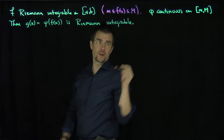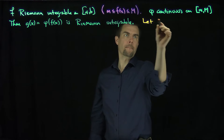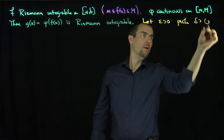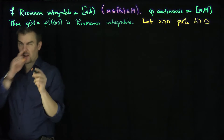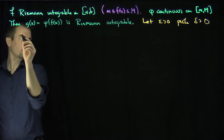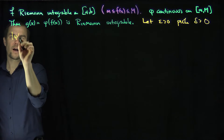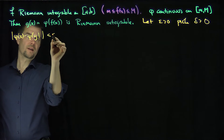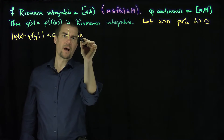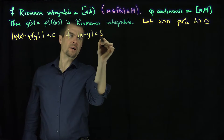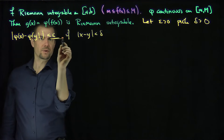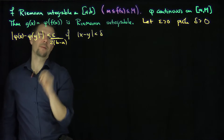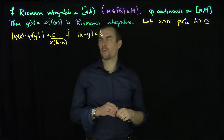So how are we going to prove this? We're going to let epsilon be greater than zero and pick delta greater than zero such that |phi(x) - phi(y)| < epsilon/(2(b-a)) whenever |x - y| < delta. That modification will help out the overall proof.